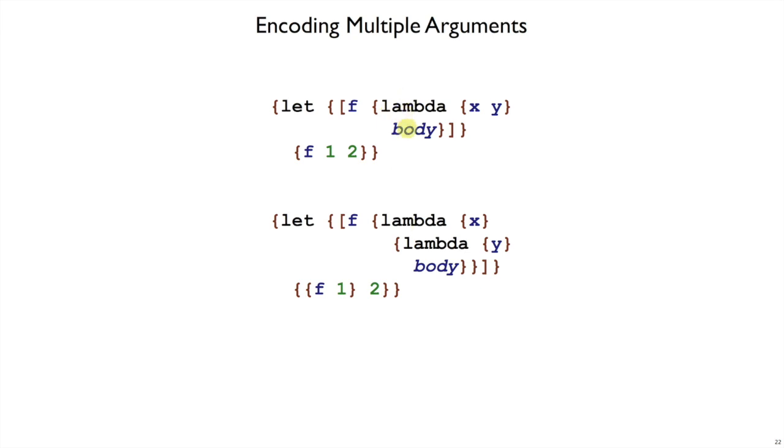It's not really the plus x y that matters. This works for any body. In fact, it works for any variables and any number of variables. You just need to use the same names and nest lambdas the same number of times as you have arguments, and nest applications the same number of times as well.